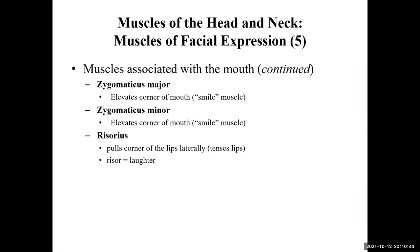Zygomaticus major and zygomaticus minor are associated with your mouth — major is bigger, minor is smaller. An important thing to remember: the major is always below the minor. So when you have a major and minor muscle close to each other, the minor is going to be superior. Zygomaticus major and zygomaticus minor attach to the upper corners of your mouth; when they contract, they allow you to smile.